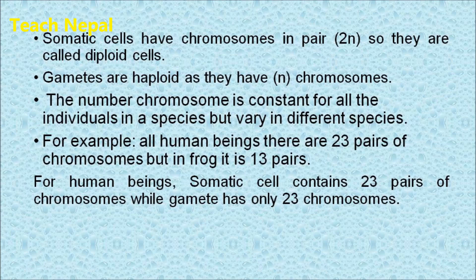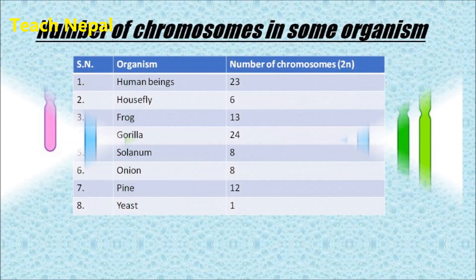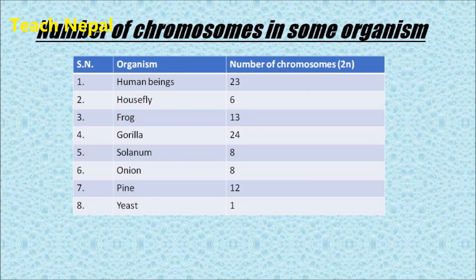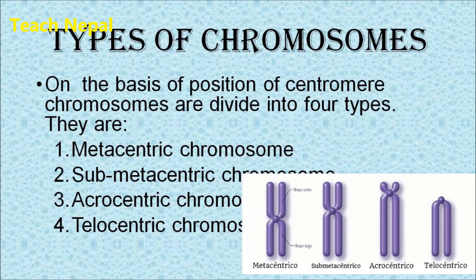Gametes have only 23 chromosomes — half the number found in somatic cells, which have the double number. You can check the haploid and diploid chromosome counts in the figure. Here are the chromosome numbers in some organisms: human beings have 23 pairs (2n), housefly has 6 pairs, frog has 13 pairs, and gorilla has 24 pairs.